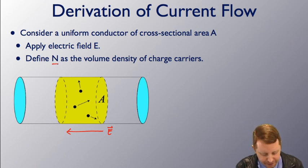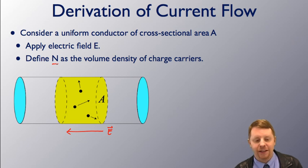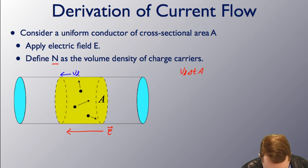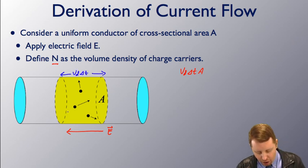If we then define n as the volume density of charge carriers, the electrons contained in some volume v_d delta t A is then going to pass surface A in time t. What we're really talking about here is if we were to define the drift velocity v_d times some time interval delta t, all of the charge carriers in this volume are going to pass surface A in that amount of time delta t.